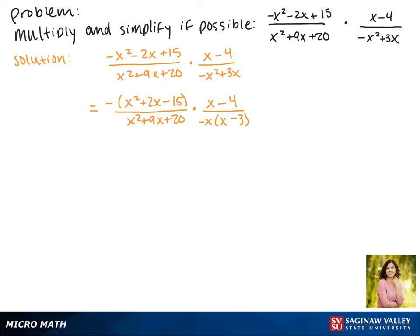Now we have to factor the trinomials. In the numerator, the factors of negative 15 that will add to make negative 2 are positive 5 and negative 3. In the denominator, the factors of 20 that will add to make positive 9 are positive 5 and positive 4. Then this x minus 4 here can't be factored. We already factored the denominator to negative x times x minus 3.